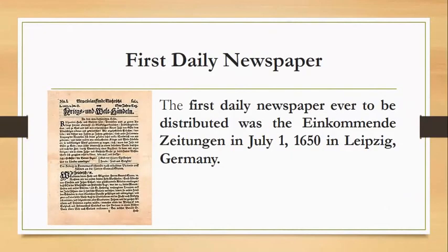Next, we have the first daily newspaper. The first daily newspaper ever to be distributed was the Einkommende Zeitung, on July 1, 1650, at Leipzig, Germany. The name of the newspaper means 'incoming daily papers.'